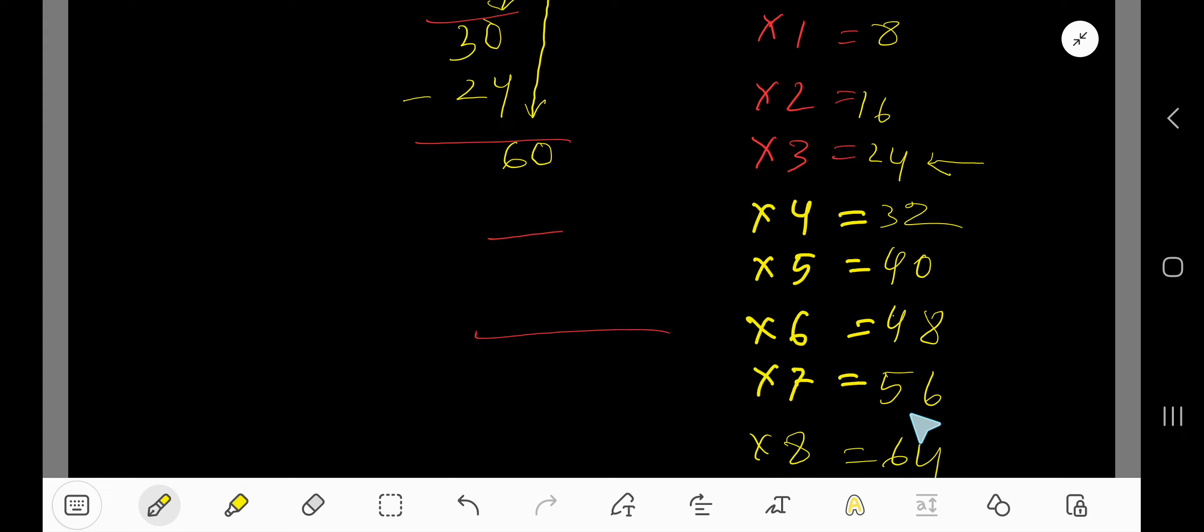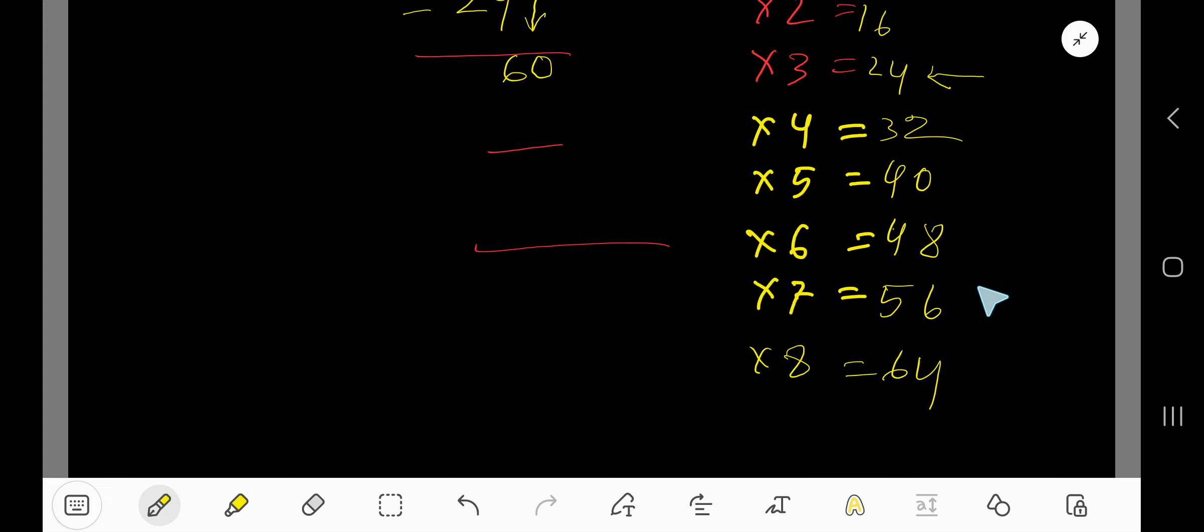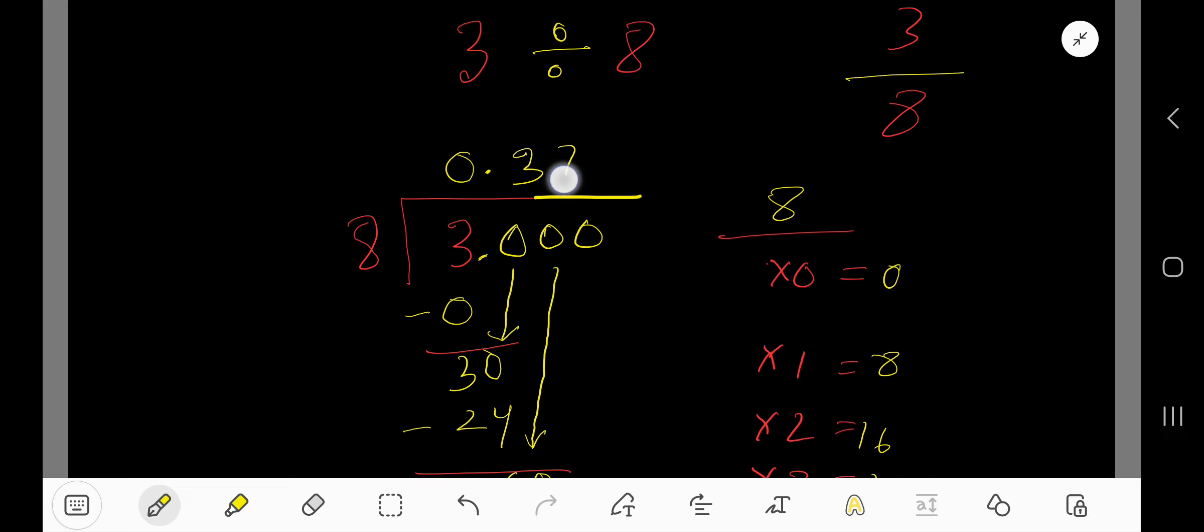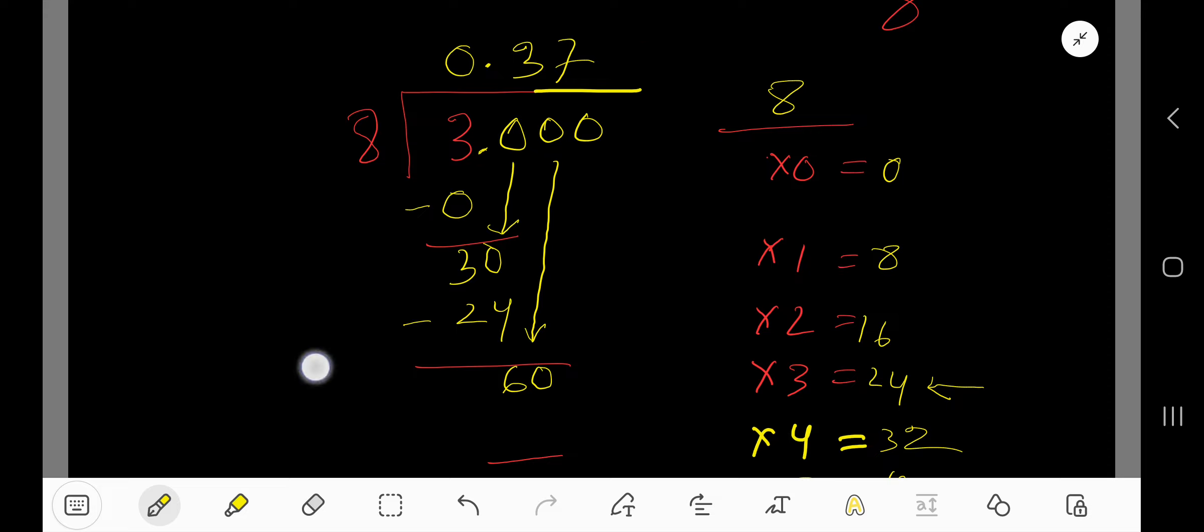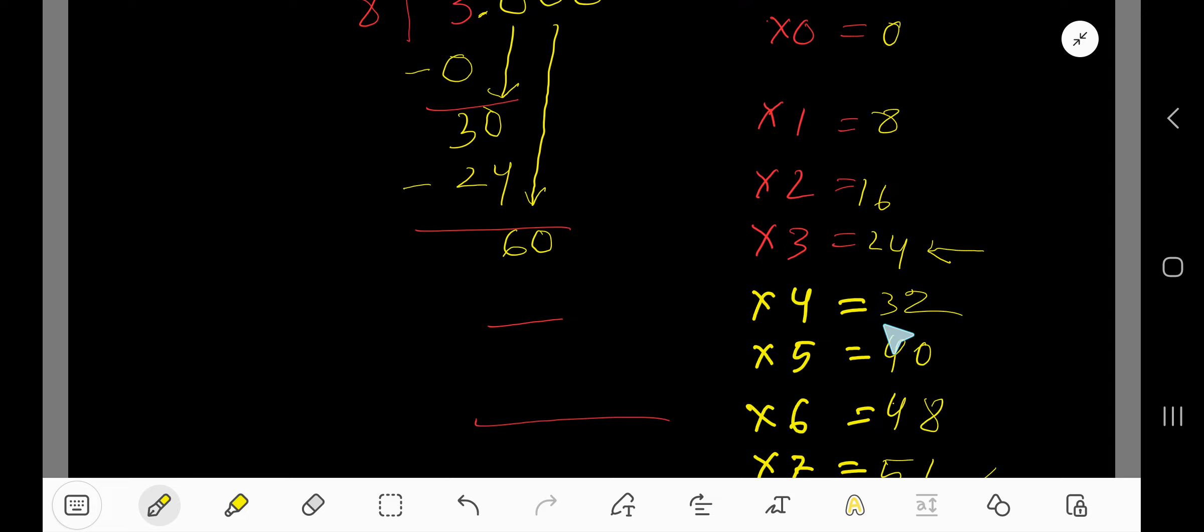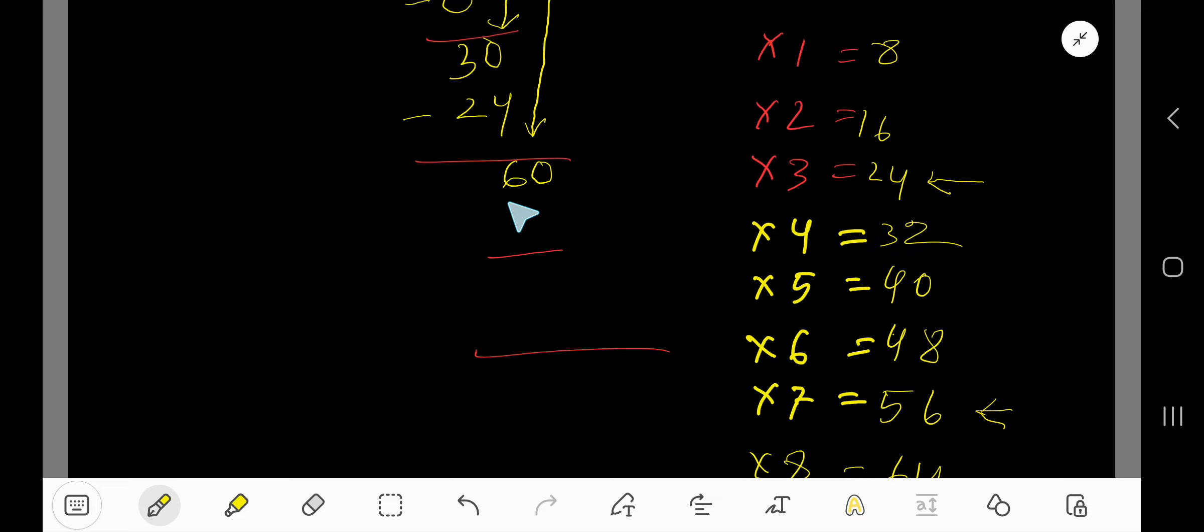We have 56 and 64, so we stop at 7 times. Write 7 here. 7 times 8 gives us 56. If you subtract, you get 4.